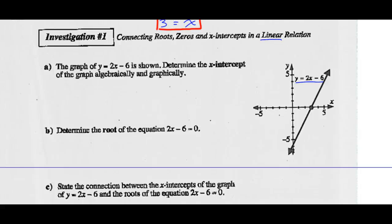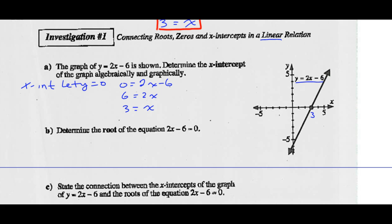Determine the x-intercept. It looks like it crosses the x-axis here at 3. How would I find it algebraically? To find the x-intercept, we let y = 0. So 0 = 2x - 6. Add 6 to both sides, then divide by 2. So the x-intercept is 3. We've done it algebraically, and we can see it on the graph — the x-intercept is 3.